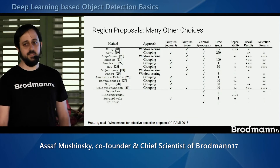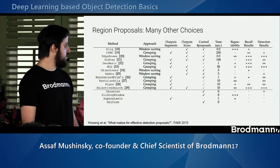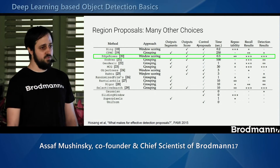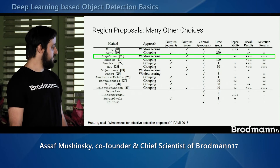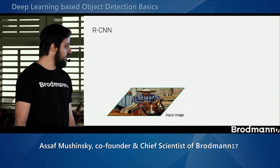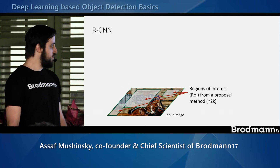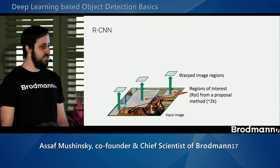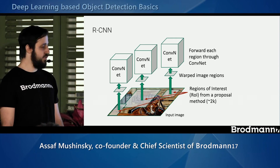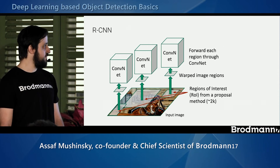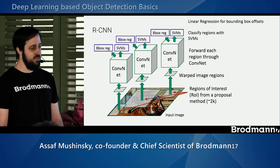There are many choices for region proposal algorithms — you can compare running time, accuracy, and so on — but currently the most common use is edge boxes, which give a pretty good trade-off between speed and accuracy. So how does RCNN work? We take the input image, apply the region proposal algorithm to find which regions to look at, then warp and crop those regions just like before, and apply a classification network pre-trained on a classification task to extract features. Then we apply classification using a trained SVM and bounding box regression using linear regression.